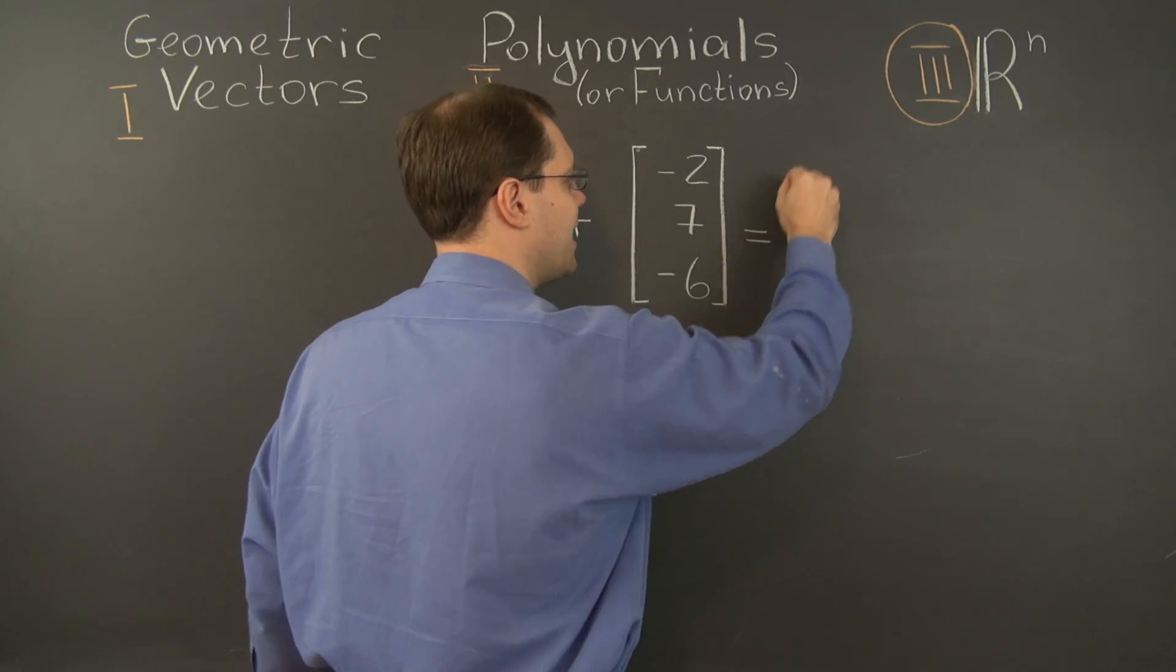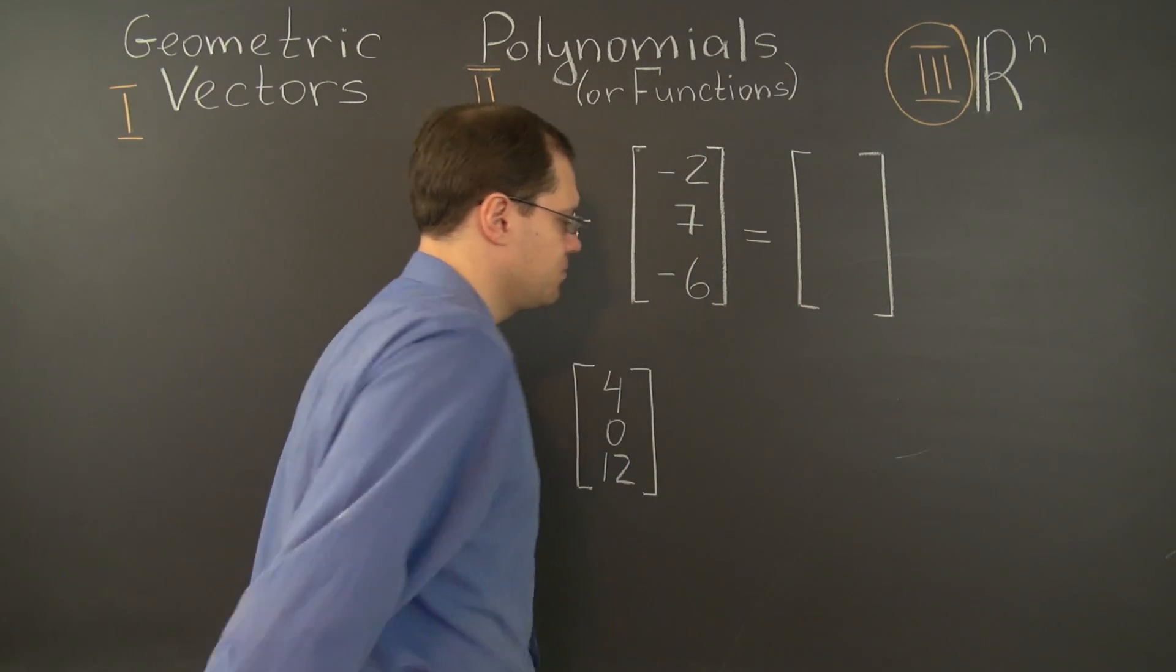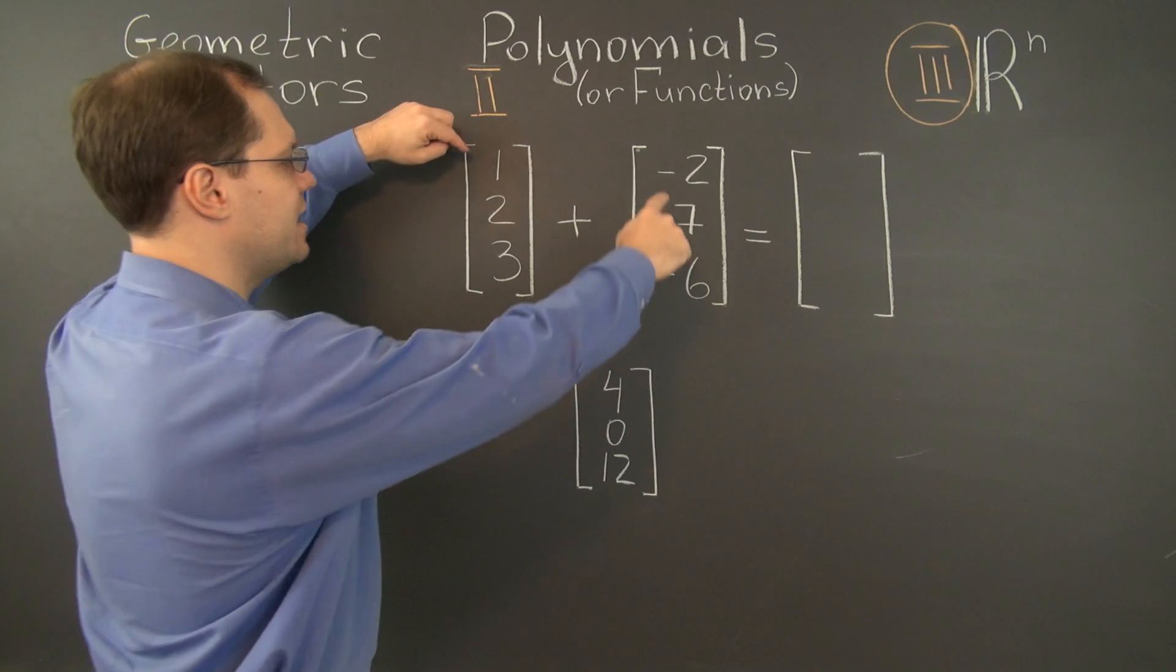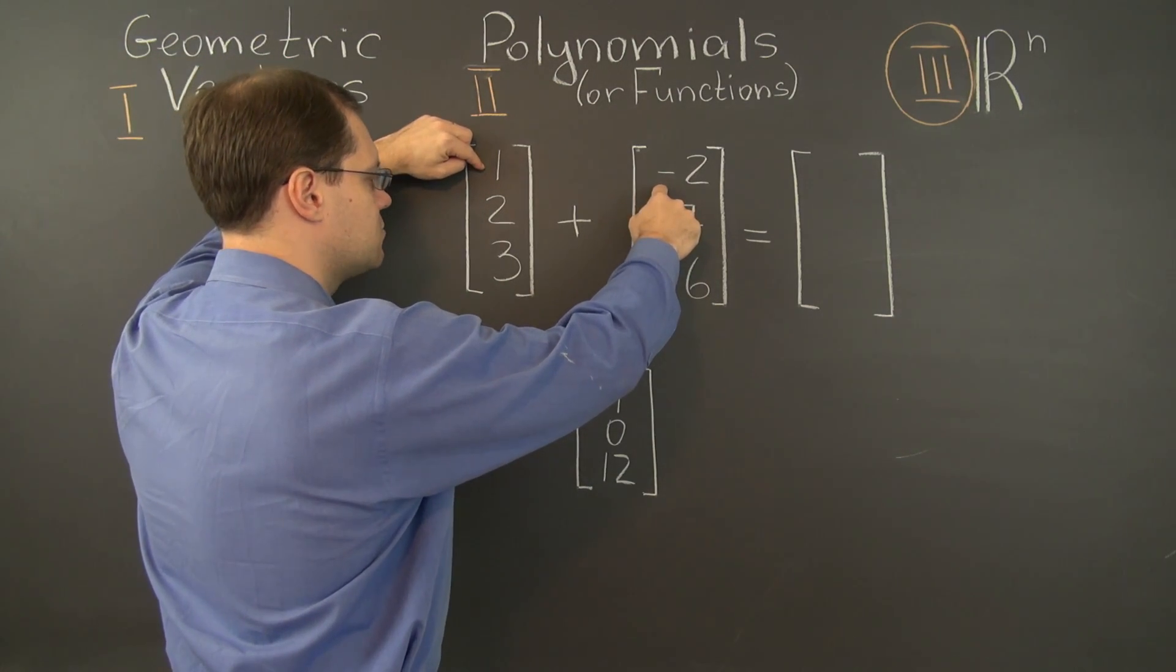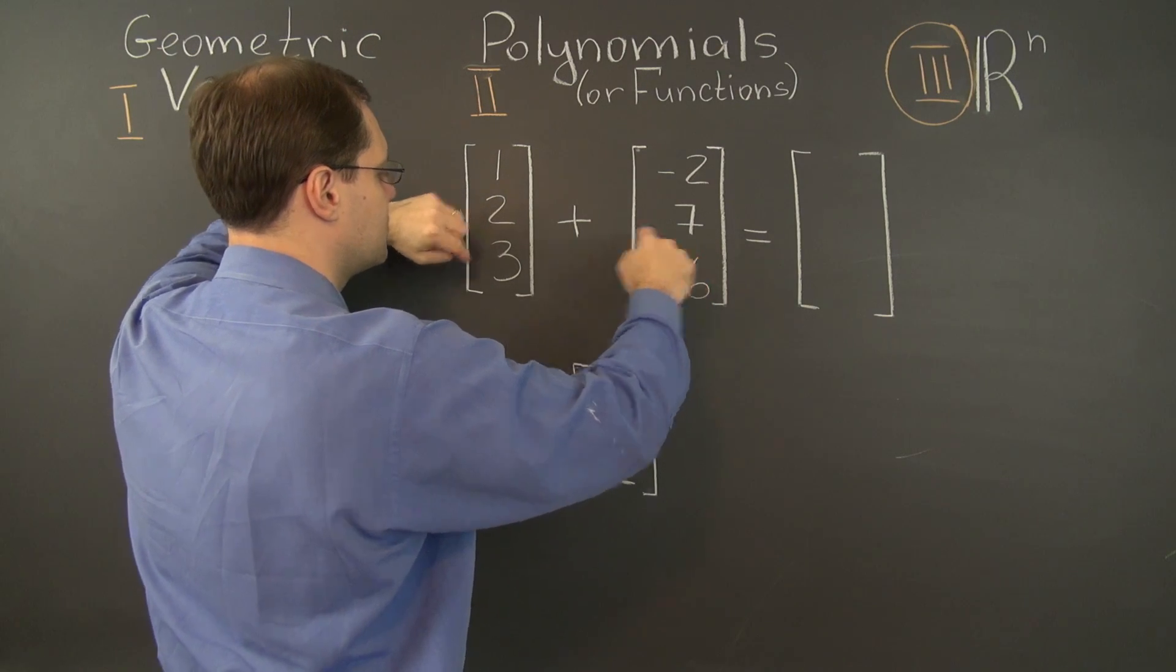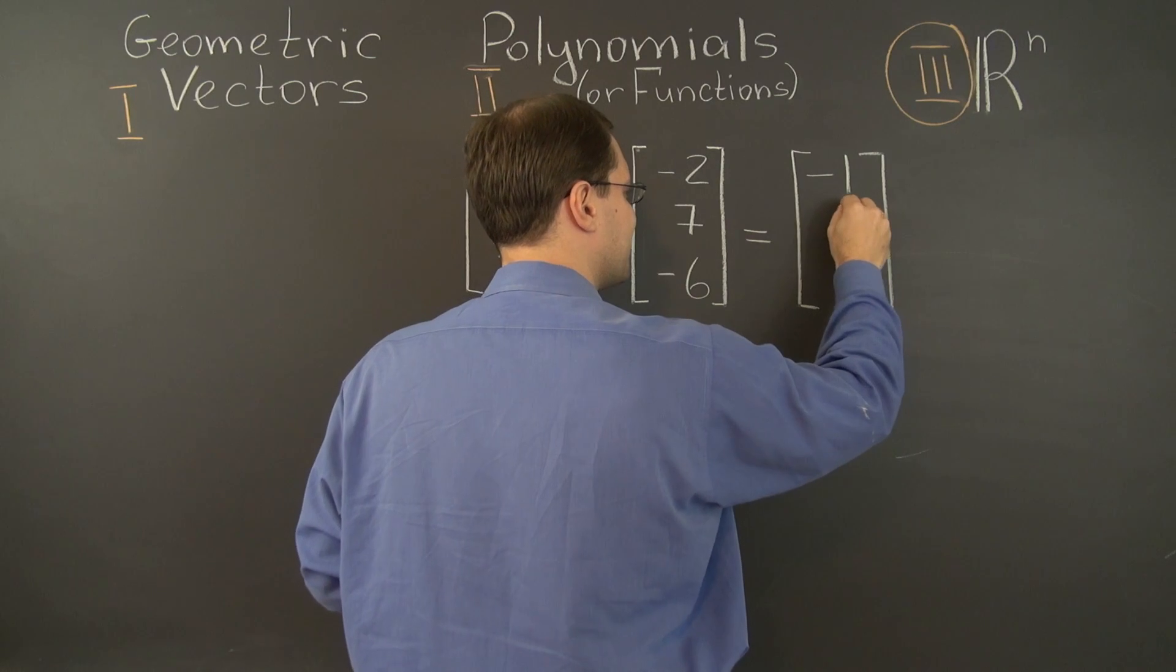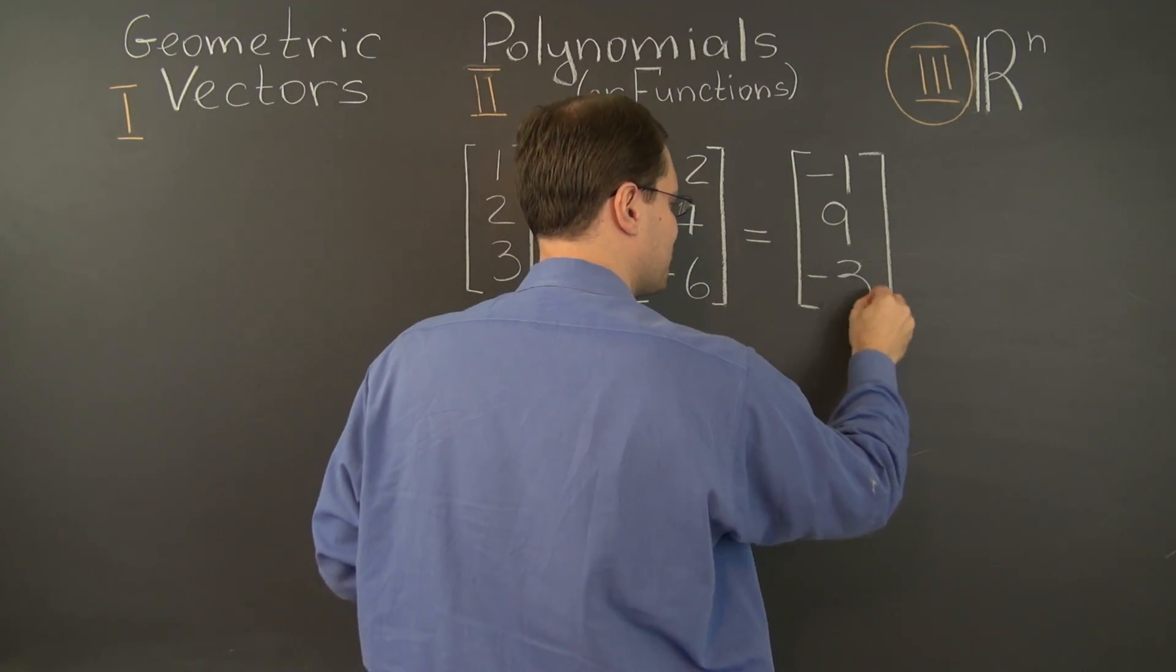So the result of adding these two vectors will be another element of R^3, more generally R^n, with entries minus one, nine, minus three.